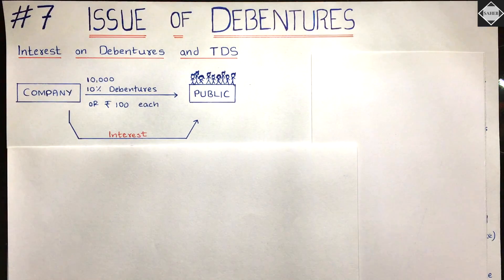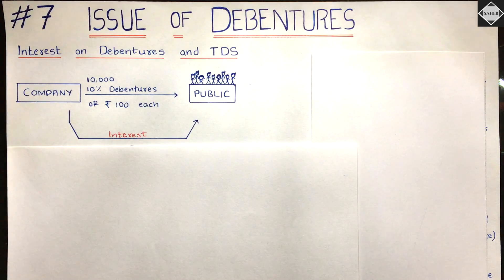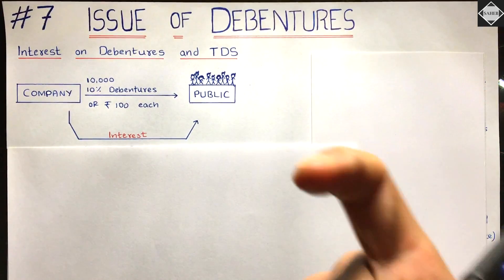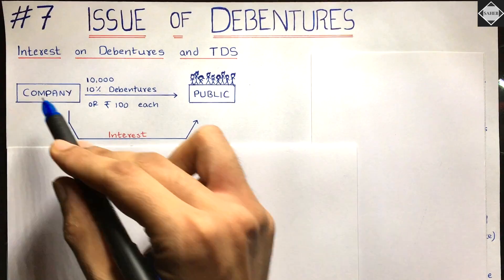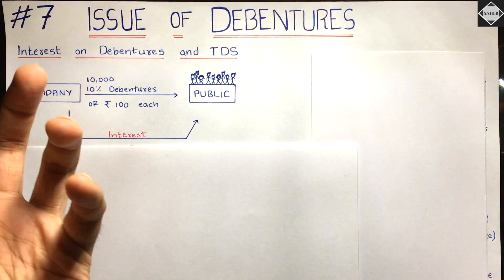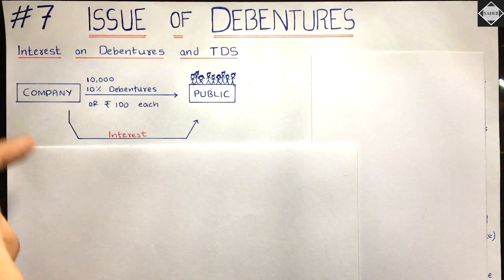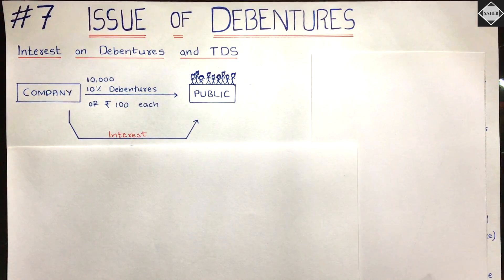This money has to be repaid at maturity after five or ten years. But right now, just after six months or one year, the company has to pay interest on these debentures because they function like a loan — this 10 lakh is debt. Paying interest is called servicing the debt.